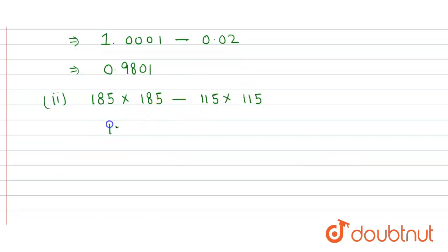This expression can also be written as (185)² - (115)². Now we use another algebraic identity according to which a² - b² = (a - b)(a + b).